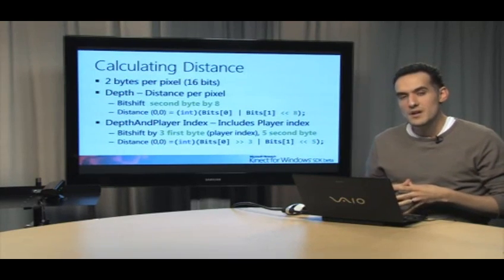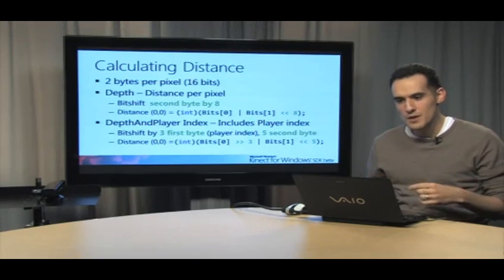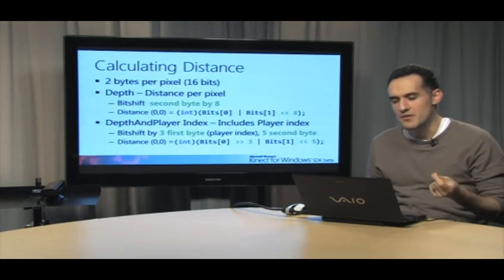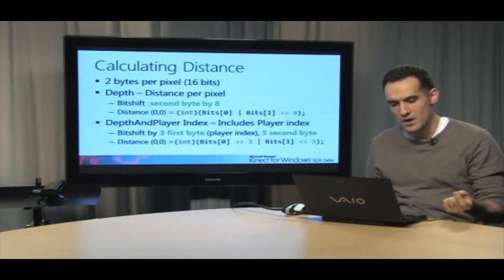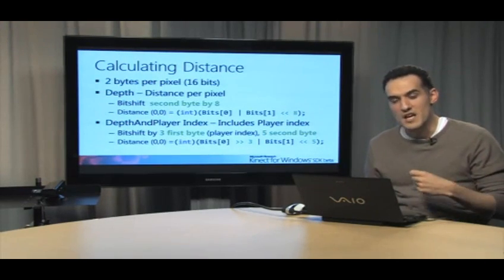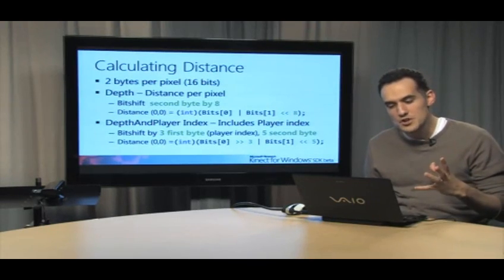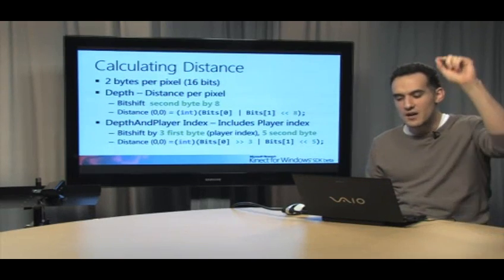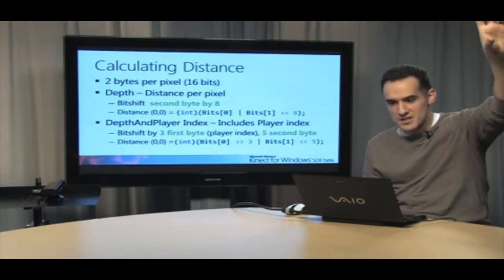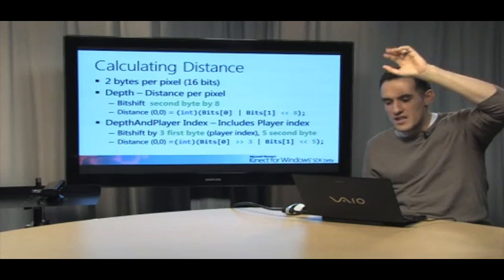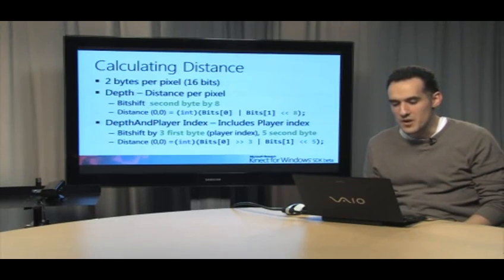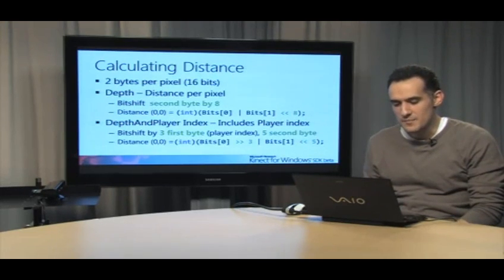So how is this stored? It's in two bytes per pixel, so 16 bits total. Now there's actually a different formula depending on which type of image you set up the runtime option for. If you set up the runtime option for depth, you bit shift the second byte by 8, and if you set up for depth and player index, you're going to do a different formula. So for the first one, second byte by 8, if we wanted to get the distance of the point at 0,0, we use a bit shifting formula for bit 0, which represents the first byte, and then bits 1, and then we bit shift that second byte by 8, and that gives us the distance in millimeters for that particular point. For 0,0, I now know the distance from the connect sensor.